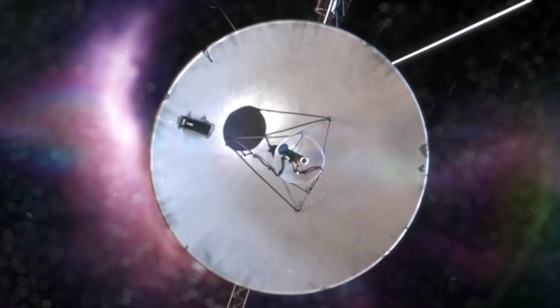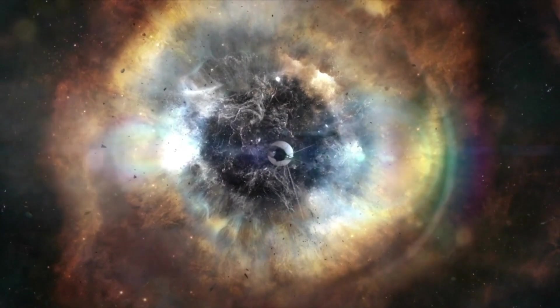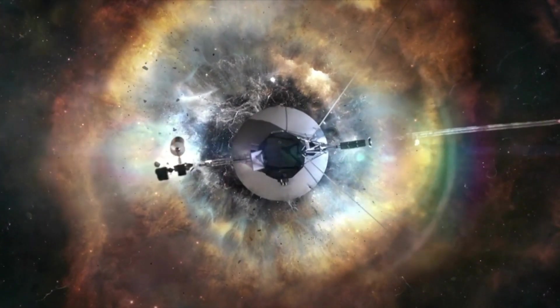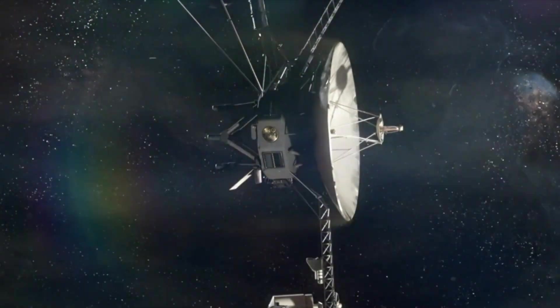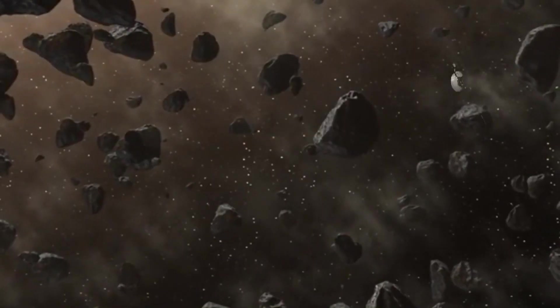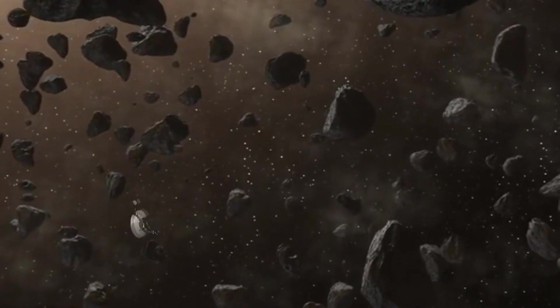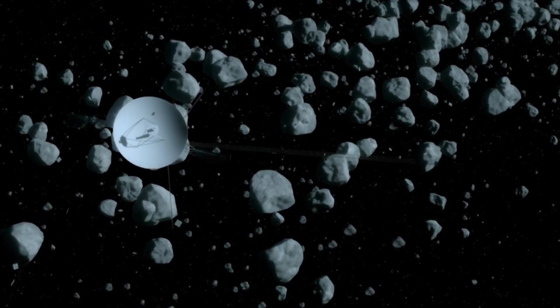And only then will it approach the Oort cloud. The following figures sound even more fantastic. It will take 30,000 years for a research probe to cross the Oort cloud. That's its size. But even then, neither one nor the second of the Voyagers will help us to find out what is there, in reality. In the hypothetically existing space cloud, everything is conditional and may not be true.